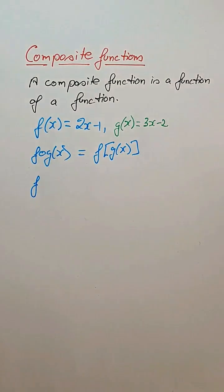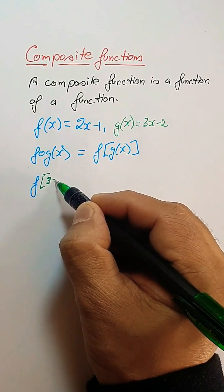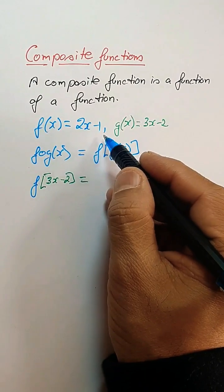We write the value of g(x), which is 3x minus 2. After writing 3x minus 2, we'll apply the function f, which states that 2x minus 1. Here, x is the whole 3x minus 2.